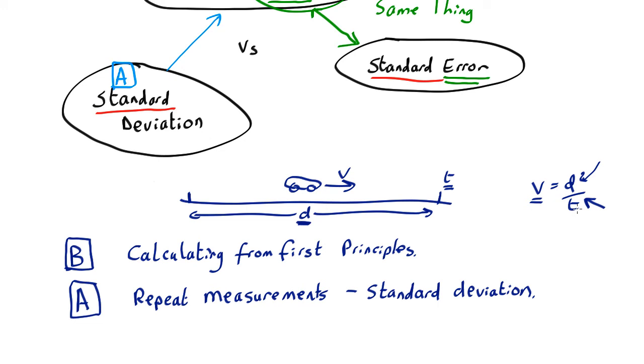So if you haven't made the measurements yet and you want to know what uncertainty you're going to have, type B is your only option. If you've made a bunch of measurements, then you can use type A.